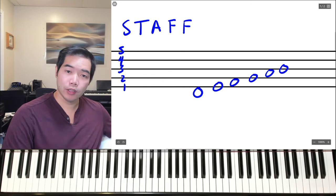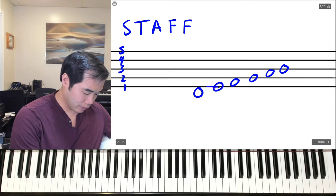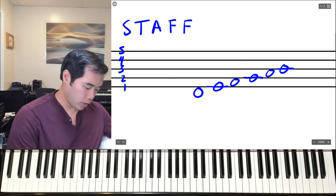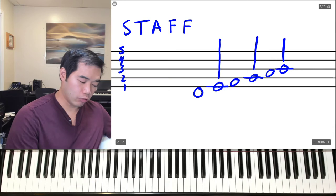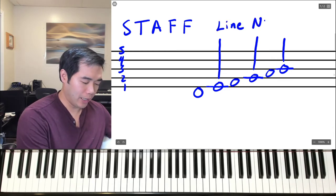Now sometimes the notes are going to be on the lines. Like here you can see that the line of the staff crosses through the note, also crosses through this note, as well as this note. When you have notes that have a line crossing through the center of them, they are known as line notes.